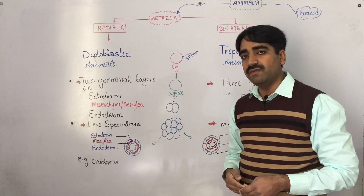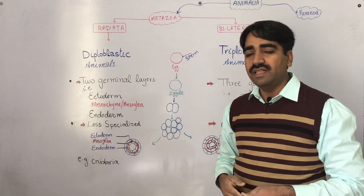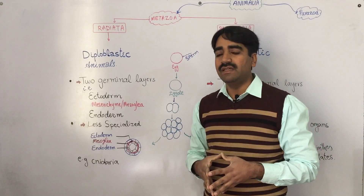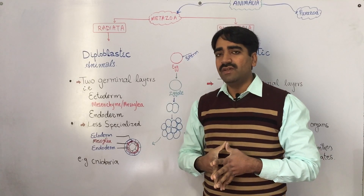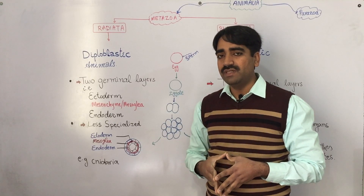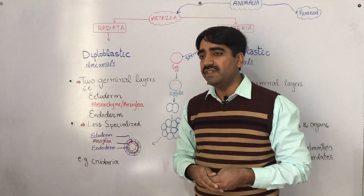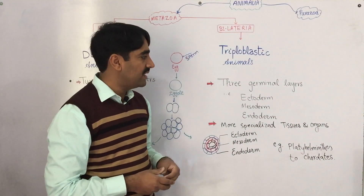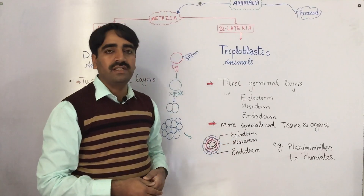The morula further develops into the gastrula by a process called gastrulation. Gastrulation results in the formation of either two or three germinal layers. If two germinal layers are formed, the animal is called diploblastic; if three germinal layers are formed, the animal is called triploblastic.